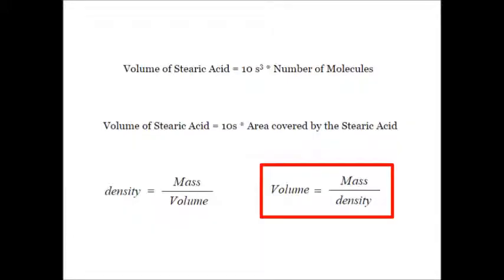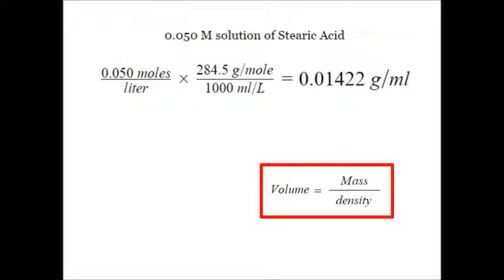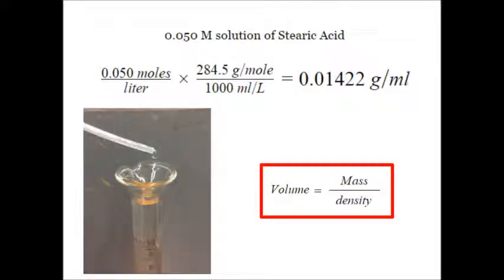Method number 3 involves density. Volume is equal to mass divided by density, which is good because we know the density of stearic acid. We were also careful to prepare a 0.050 molar solution of stearic acid, meaning there are 0.050 moles of this molecule per liter. We can use this to find that there are 0.01422 grams of stearic acid in every milliliter of the solution. Then we put one drop of the solution into the water with baby powder on top.